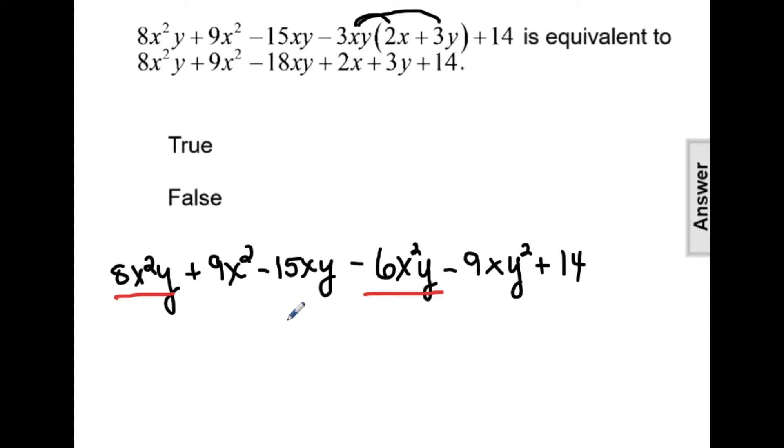And let's see, 9x squared, 15xy, 9xy squared. Nope, there's no other like terms, so I can only combine 8x squared y minus 6x squared y to be 2x squared y. And all of the other terms will stay the same since they can't combine. They are not like terms.